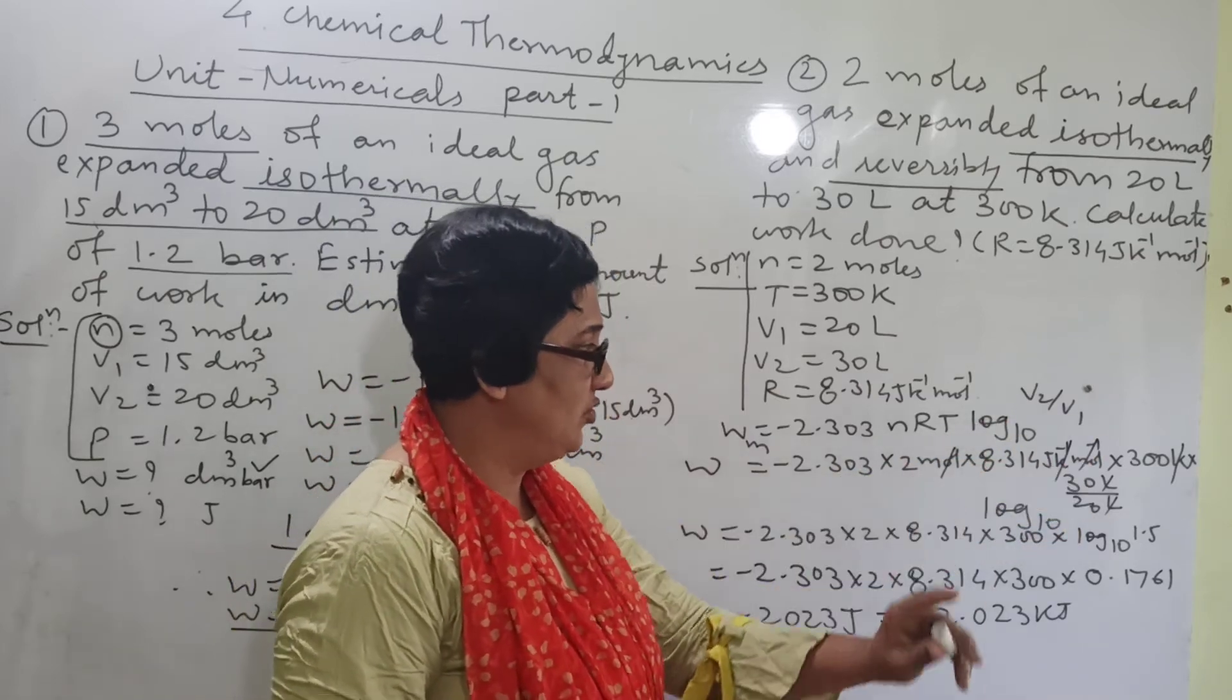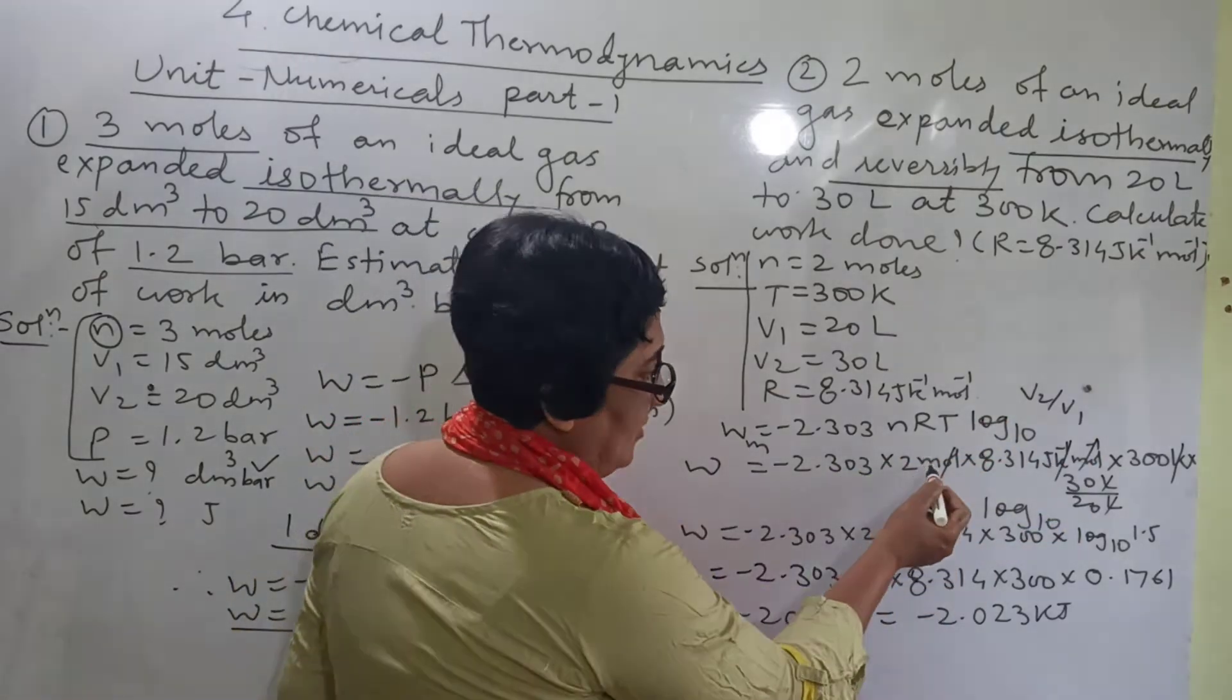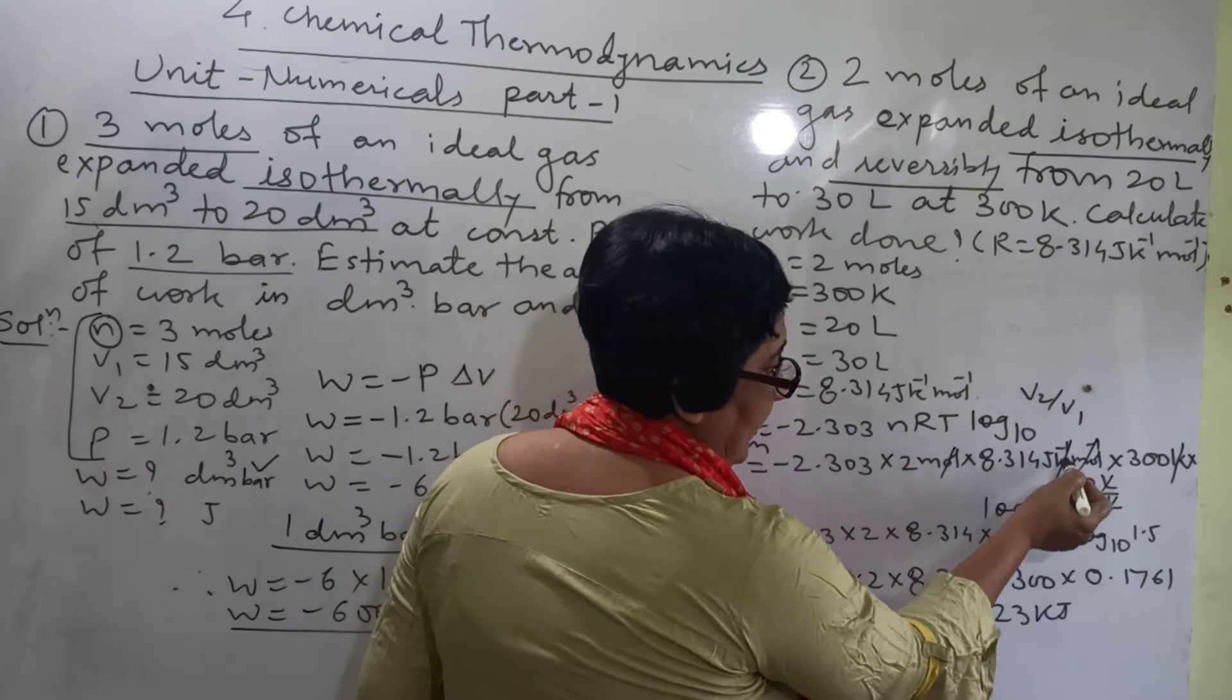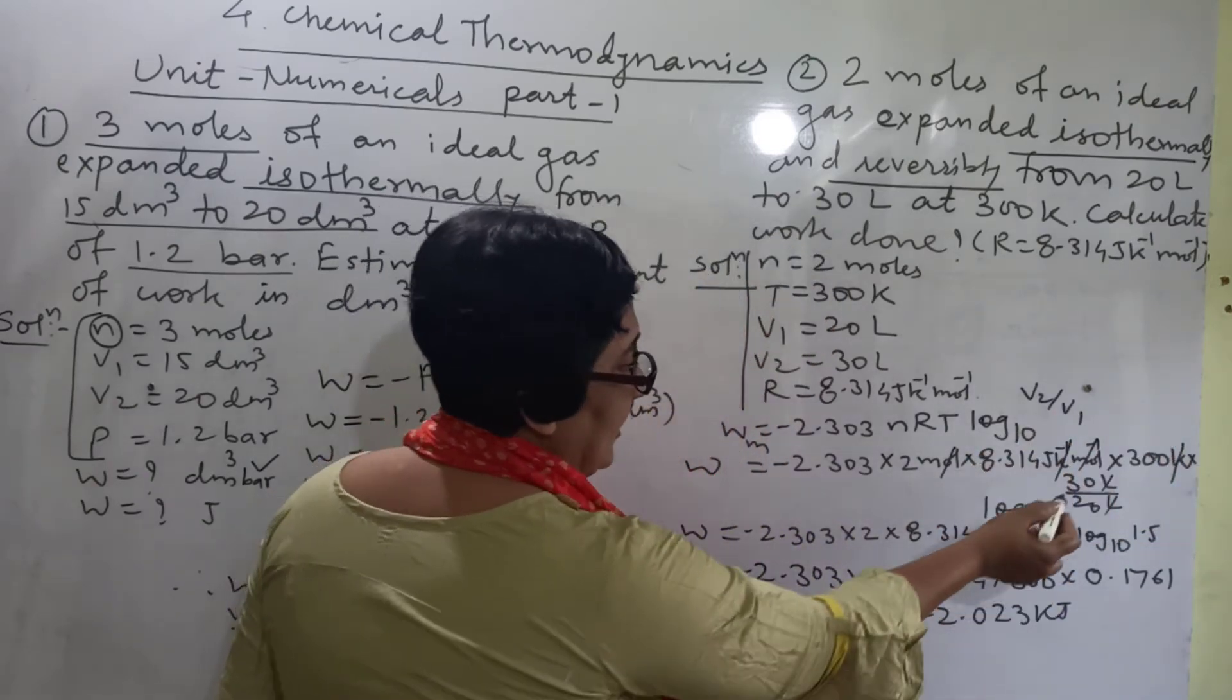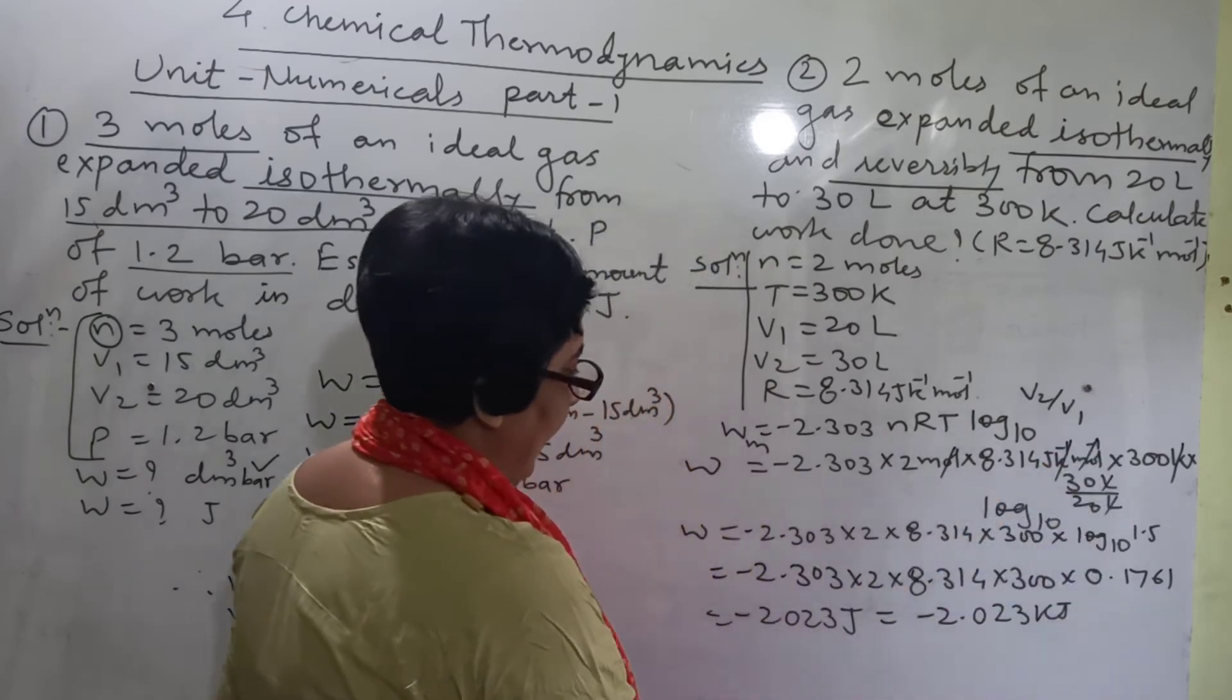Put up all the values with unit. Calculate the common terms. Mole per mole, per kelvin with kelvin cancel, only Joule remains. Litre with litre cancel.